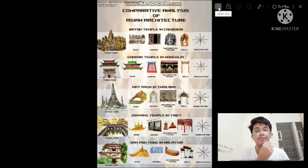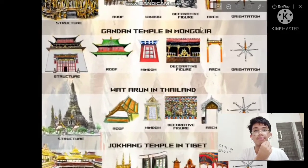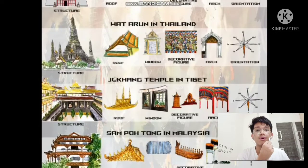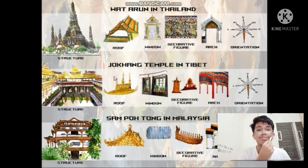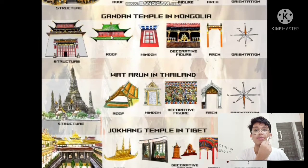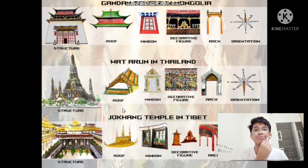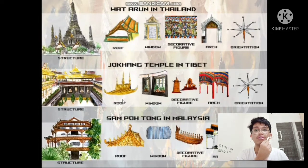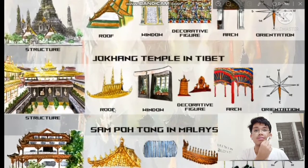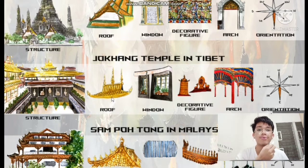Let's start with the roof. The roof in Ganden Temple, Jokhang Temple, and Sampo Thong in Malaysia is characterized by a hip roof with upturned eaves on roof corners, and mythical animal figures on top placed on the trails of the ridges of the four corners. In Jokhang Temple, the roof is colored in gold, which symbolizes respect, political, and religious power in Tibet.